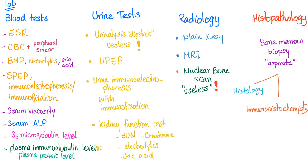Now let's go to the lab. We have four categories: blood tests, urine tests, radiology, and histopathology. Blood tests include ESR, CBC with peripheral smear, CMP, electrolytes, uric acid, serum protein electrophoresis, immunoelectrophoresis with immunofixation, serum viscosity, serum alkaline phosphatase, beta-2 microglobulin, plasma immunoglobulin level, and plasma protein level.